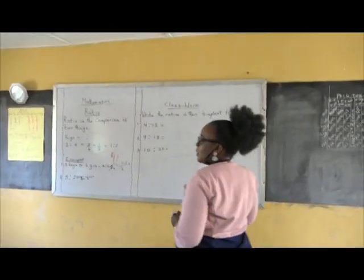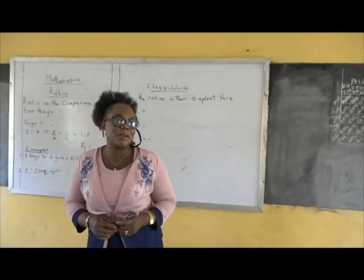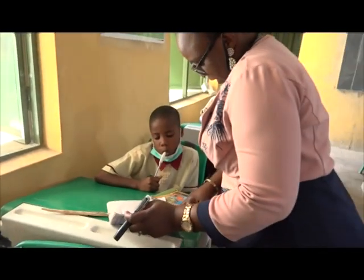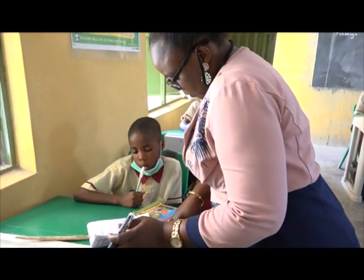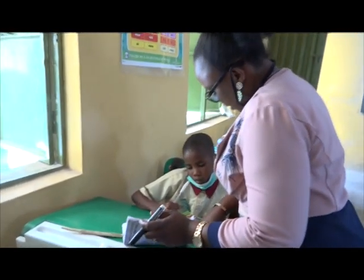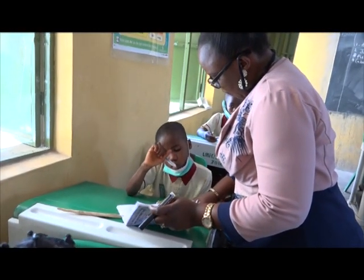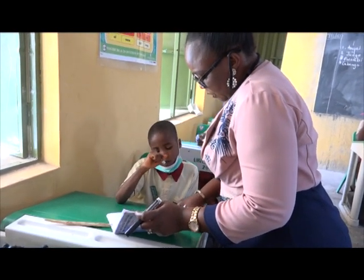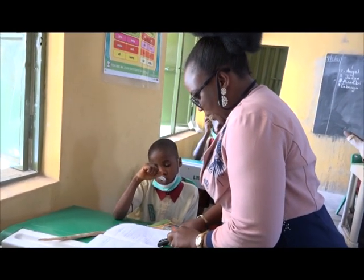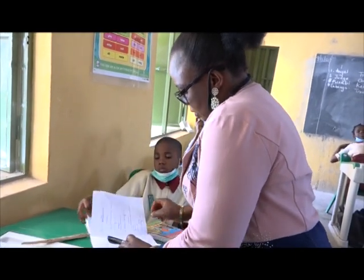Shall we do the correction? This one is to be four over twelve. Are you getting it now? Then you will divide. What are you going to use to divide it? You use four. Four goes into four once, four goes into twelve three times. So you're supposed to write four over twelve, then divide by four. Write the correction.